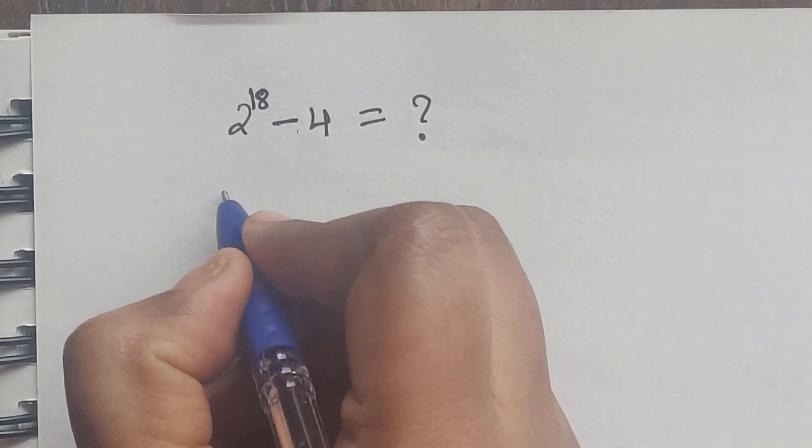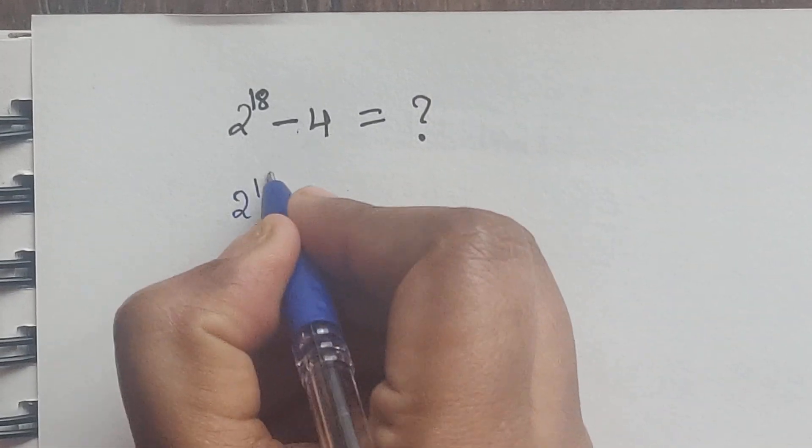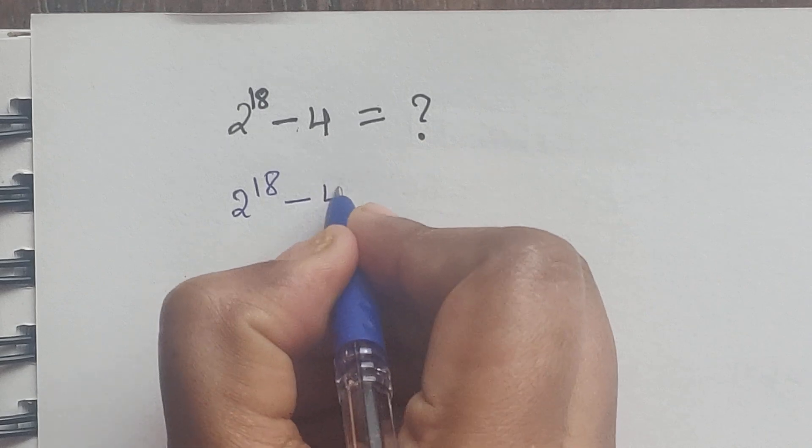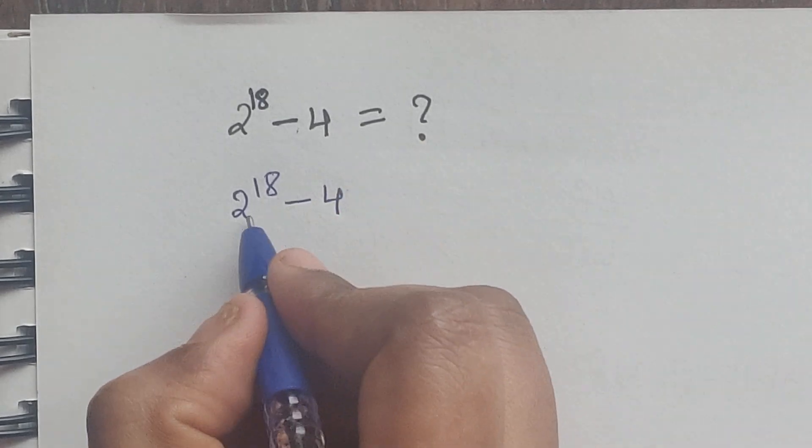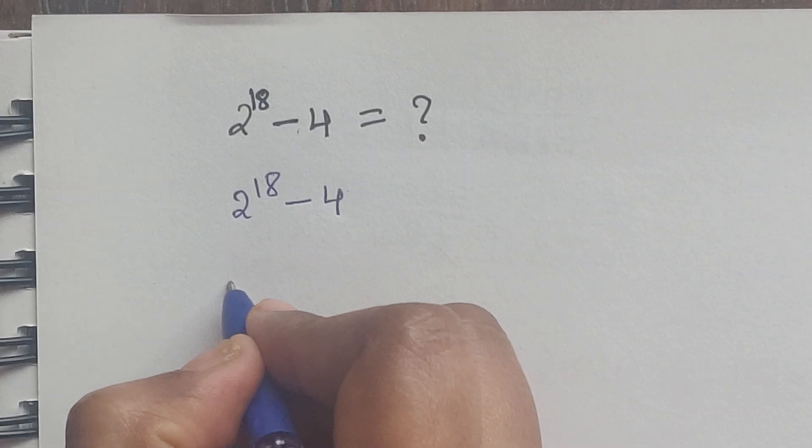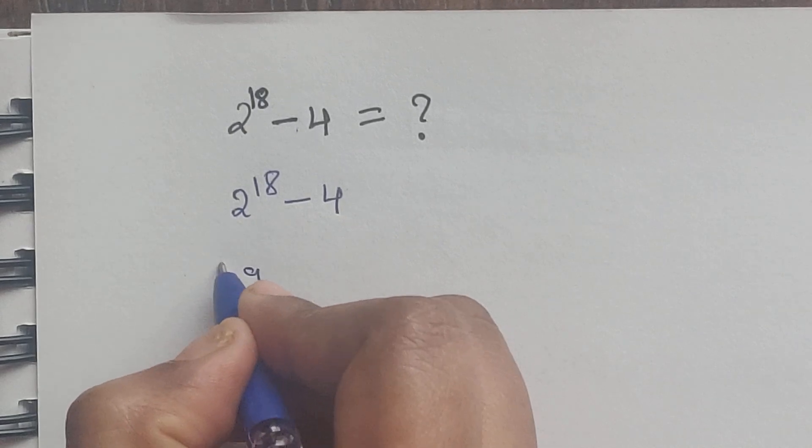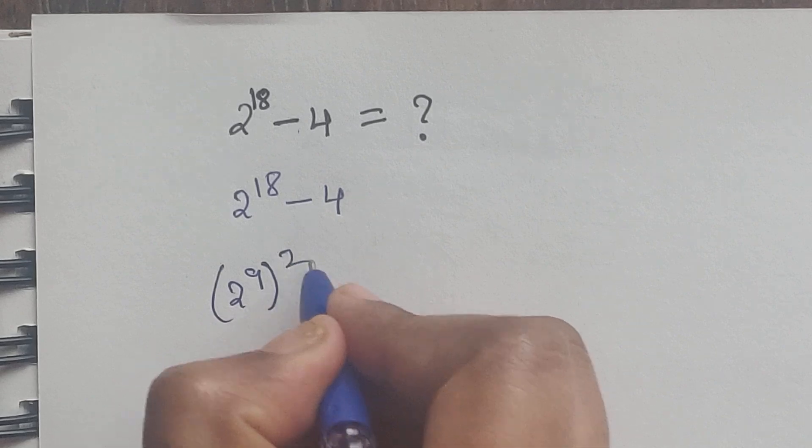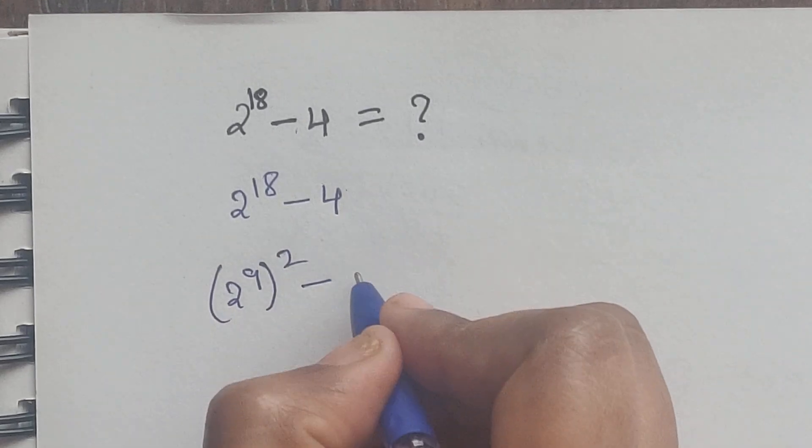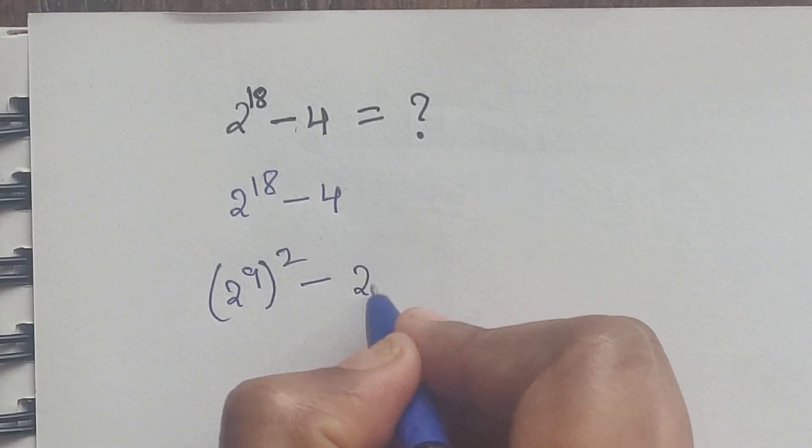So let's start. 2 to the power of 18 minus 4. First, 2^18 can be written as (2^9)^2, and 4 can be written as 2^2.